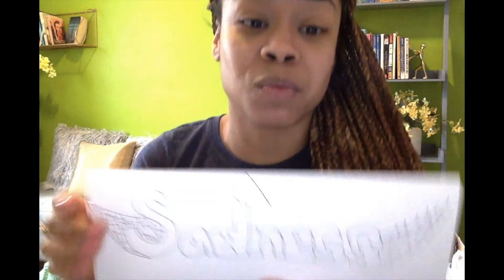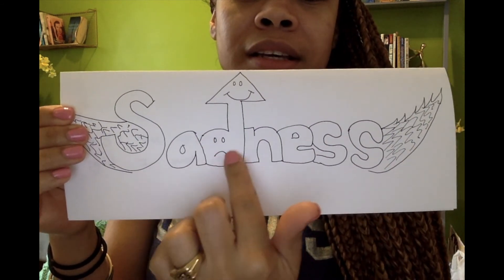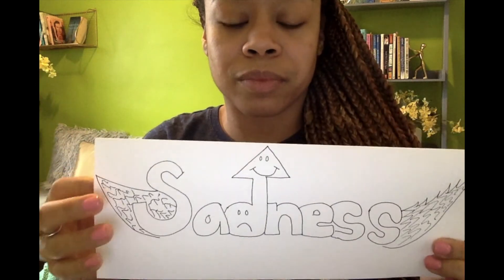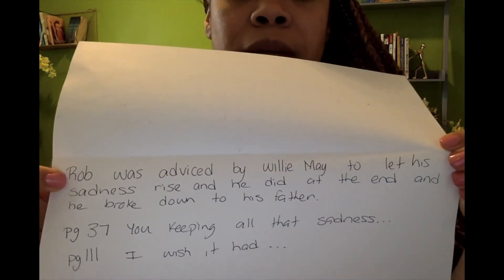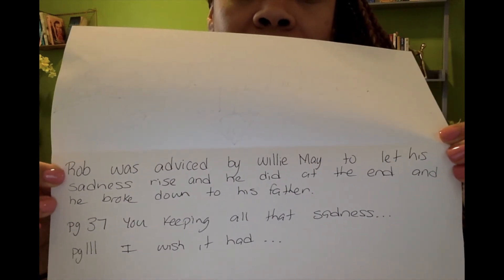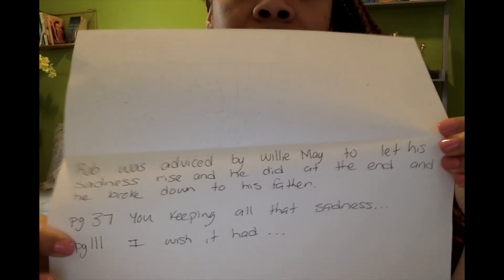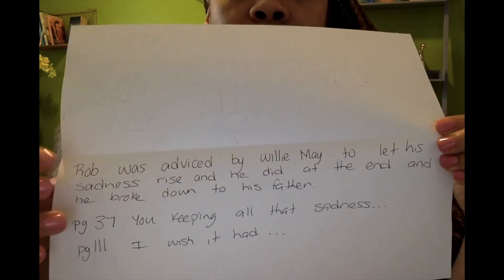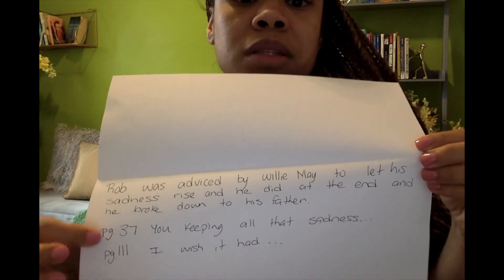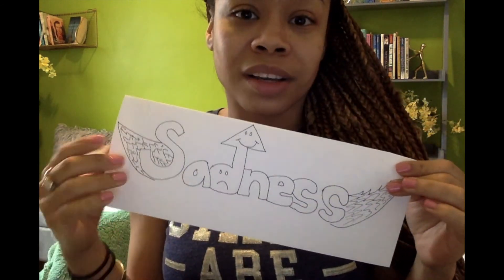The theme I selected was 'Let Sadness Rise.' Notice how the figure is sad and then the sadness rises and it's much happier — I've added wings to indicate that rising aspect. When I open it inside, there is my explanation: Rob was advised by Willie May to let his sadness rise, and he did at the end — he broke down to his father. Page 37 is where Willie May says 'you keeping all that sadness inside down below,' and page 111 is when he broke down to his father. So it's not only creating your bumper message, but also explaining why you selected it and what evidence from the text supports it.